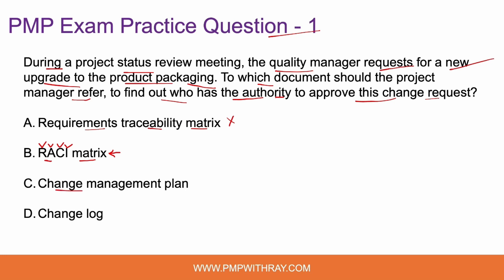Option C: change management plan. This is very important. The change management plan is developed during the planning process and talks about how changes will be managed across the entire project life cycle — who will approve the change, how changes will be documented, how they will be evaluated, and so on. The entire plan of managing a change is captured in the change management plan. So this is also a potential option to find out who has the final authority to approve the change request. Let's hold this option as well. Note that we still don't have solid grounds to reject either option B or option C.